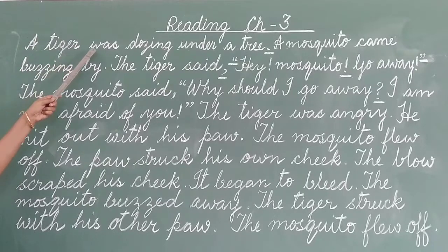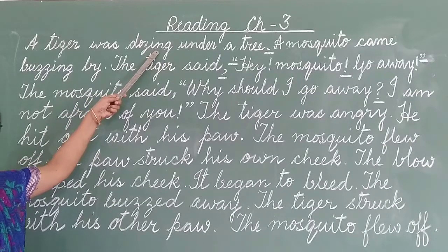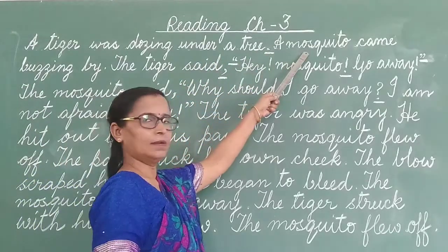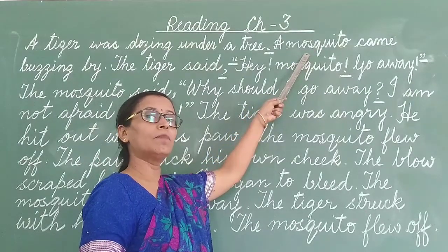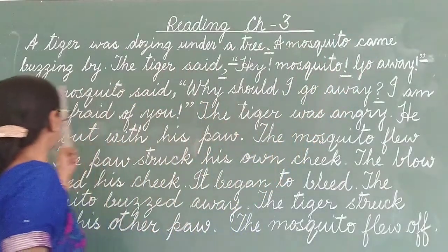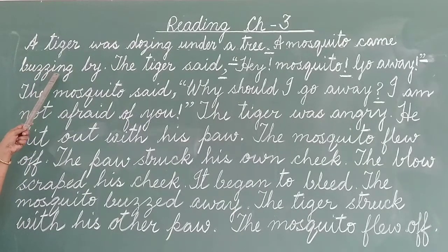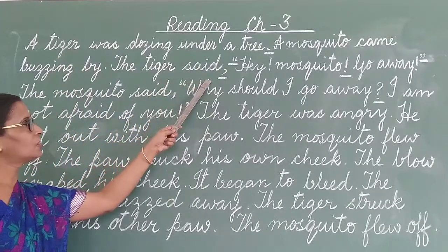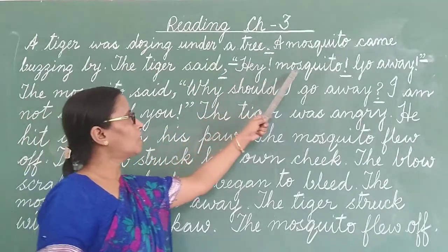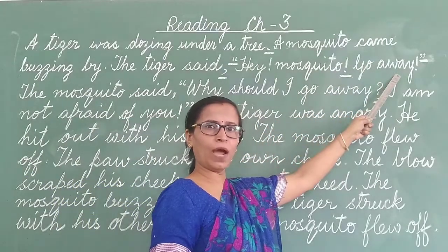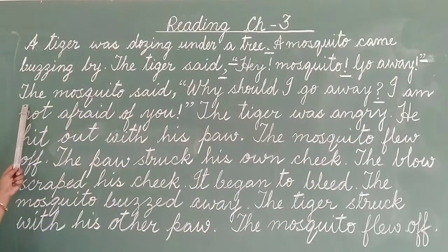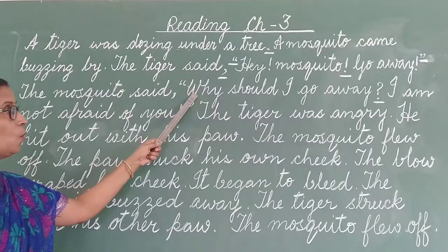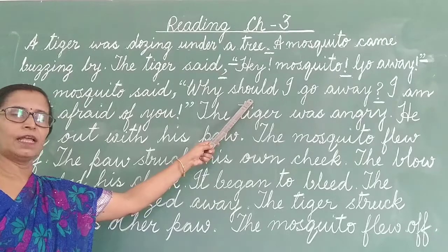A tiger was B-O-Z-I-M-G — buzzing — no, a tiger was dozing under a tree. A M-O-S-Q-U-I-T-O — mosquito — came, buzzing by. The tiger said, 'H-E-Y — hey. Mosquito, go A-W-A-Y — away. Go away.' The mosquito said, 'W-H-Y — why — S-H-O-U-L-D — should. Why should I go away?'